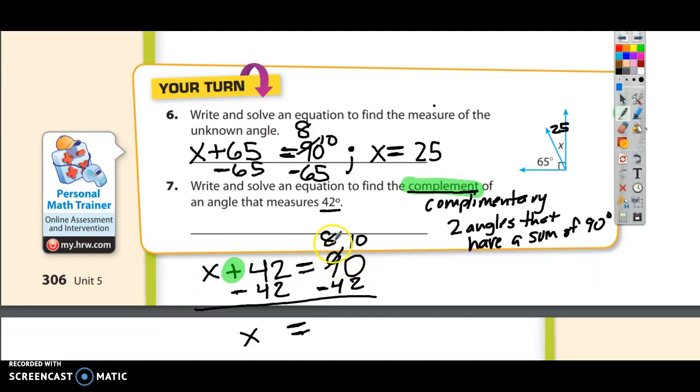I borrow from the 9, making it 8. And so I have 10 minus 2, that's 8. And 8 minus 4, that's 4. I get 48.